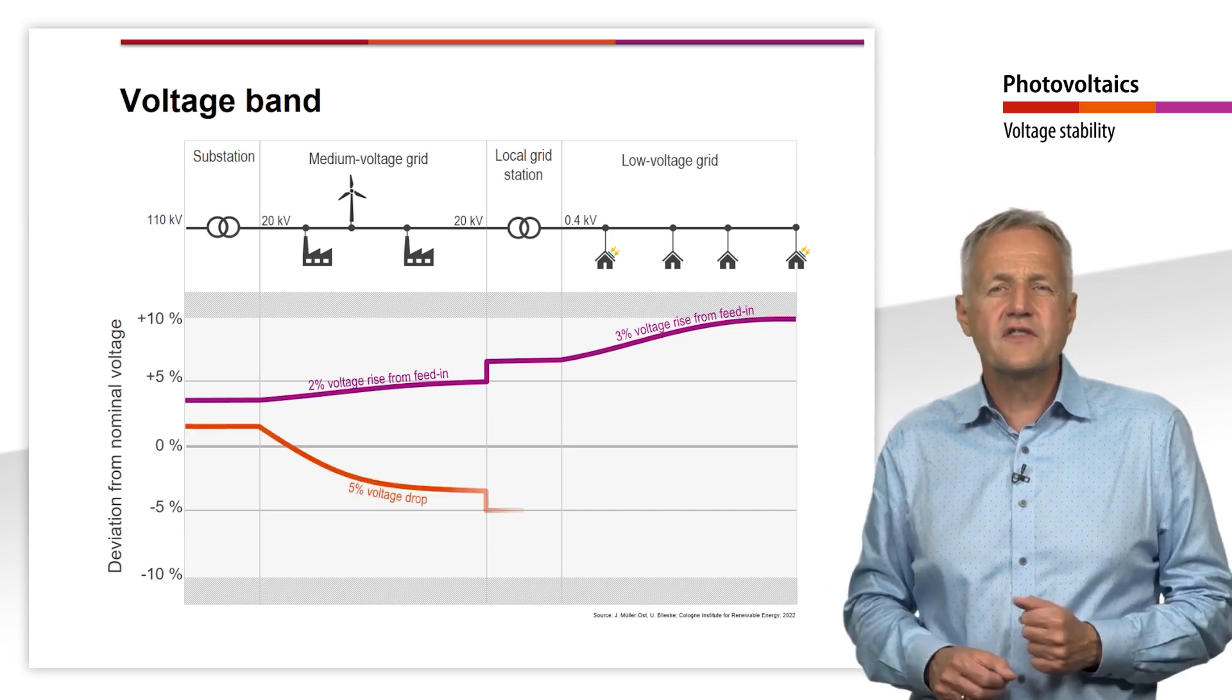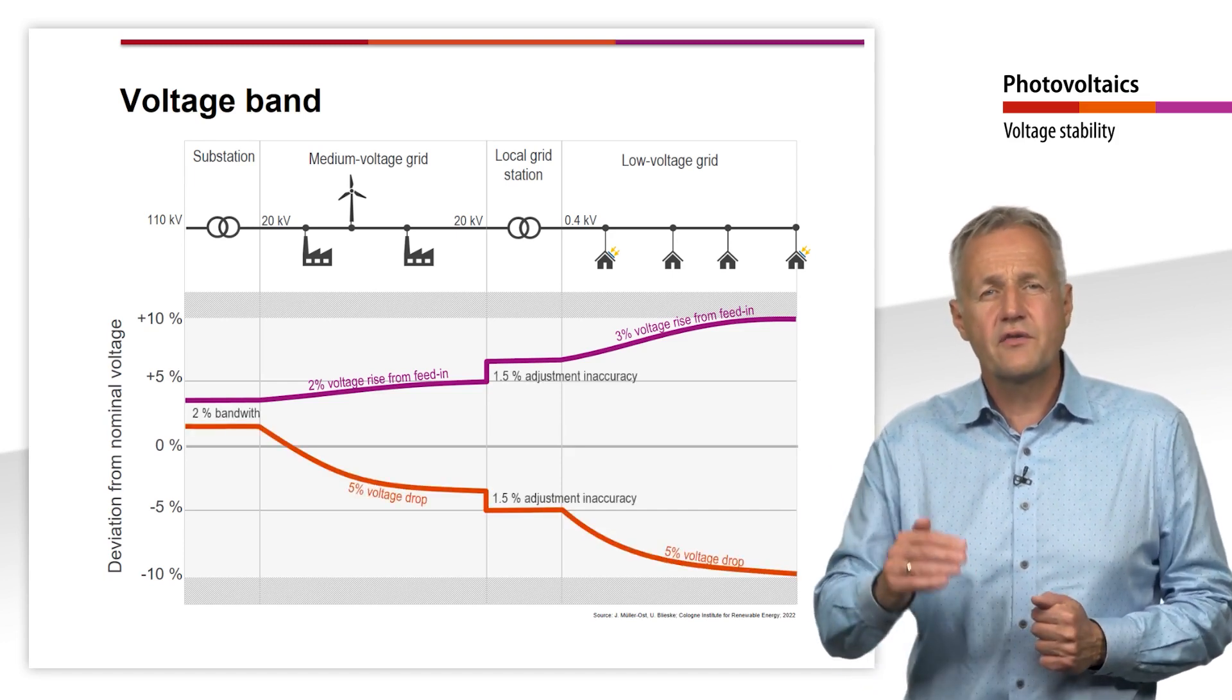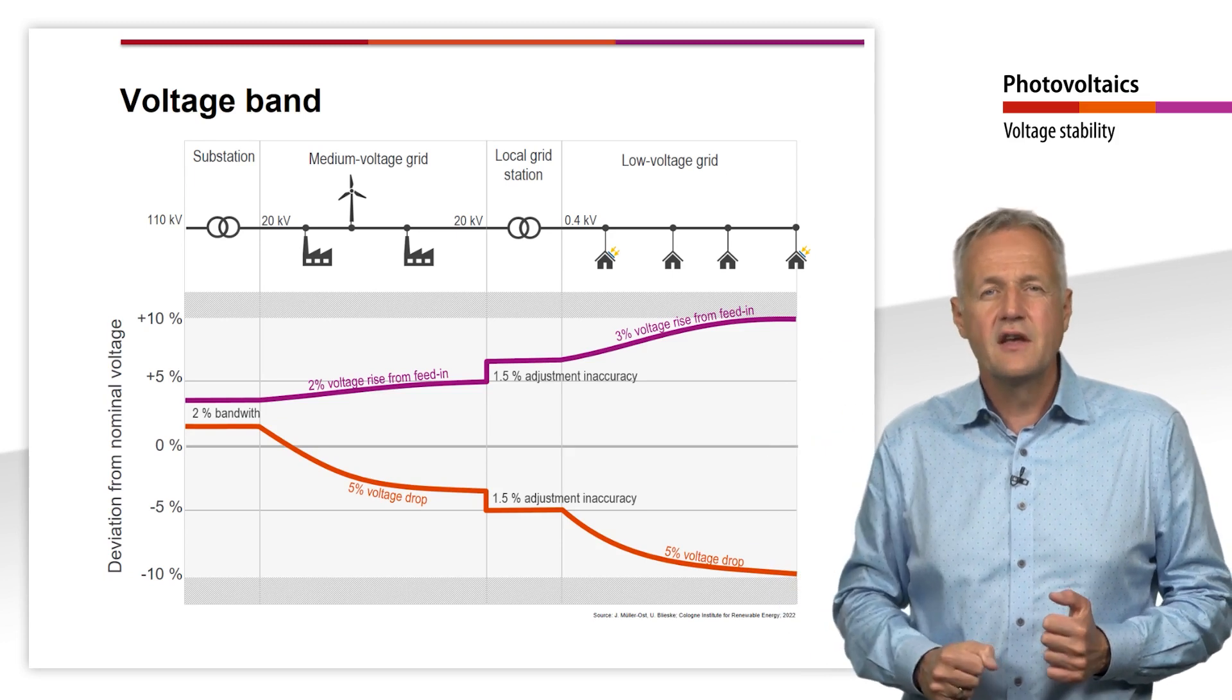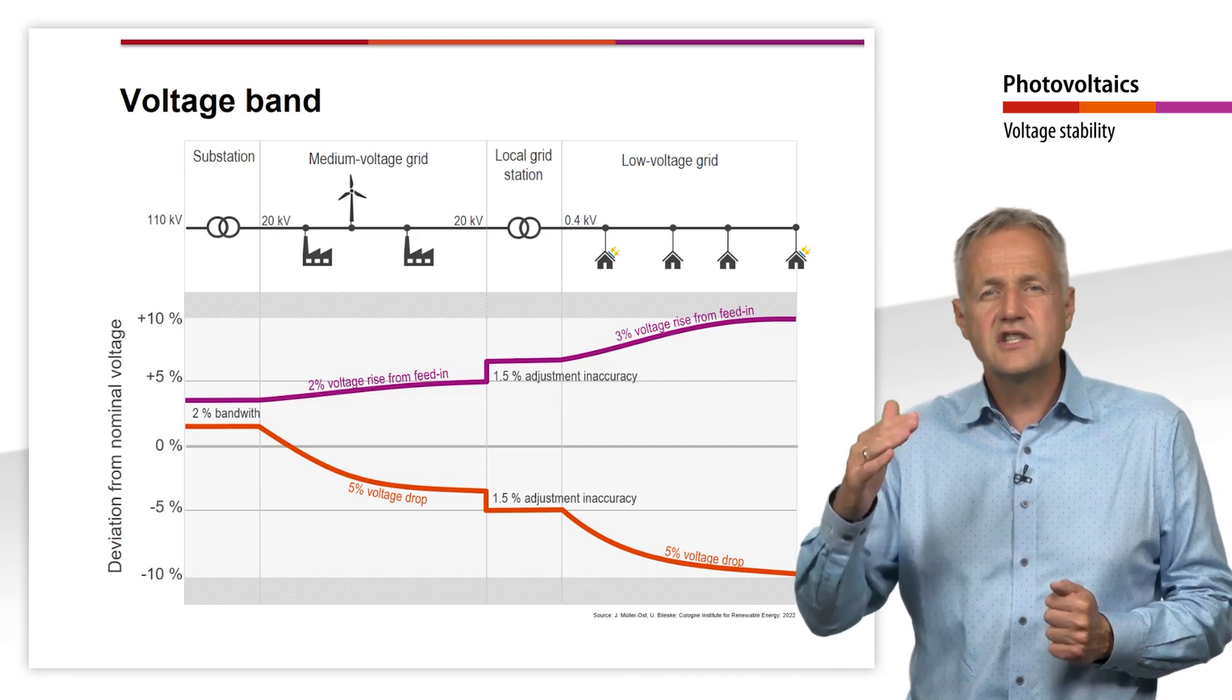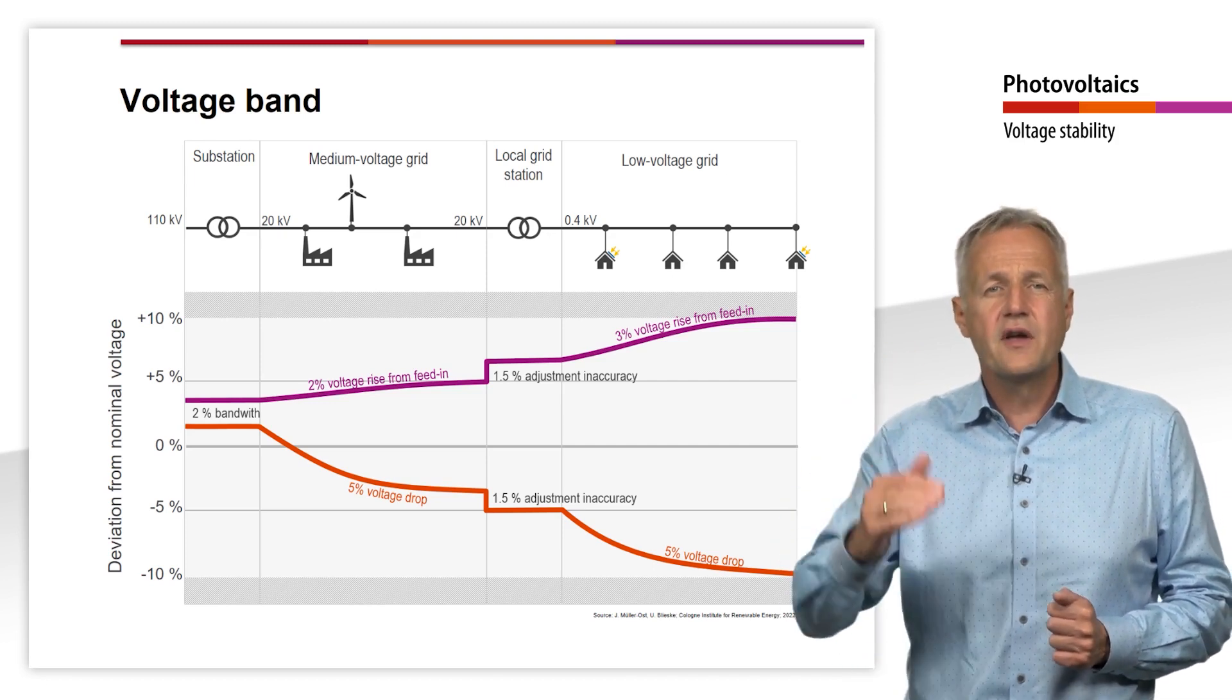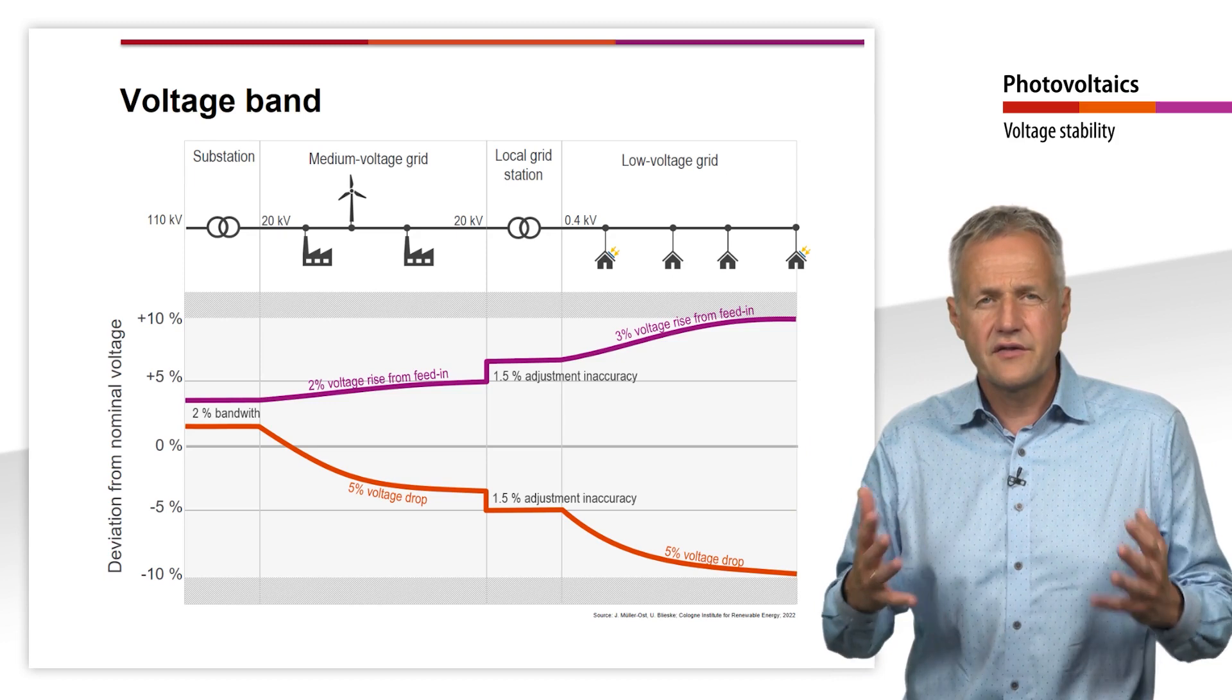In addition, 2% is allocated for voltage regulatory inaccuracy at the substation and 1.5% each for voltage rise and drop at the local grid transformer.